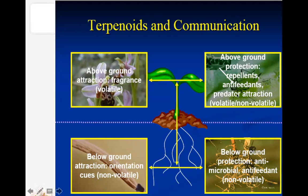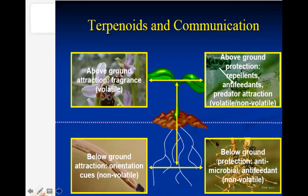Predators are beneficial insects that are harmful to insect pests, and they are attracted by some volatile and non-volatile Terpenoids. Below ground, some Terpenoids attract beneficial microorganisms or insects, while others are antimicrobial or antifeedant against insects. Plants can communicate with beneficial organisms through Terpenoids, and they defend themselves from the attack of herbivores and microorganisms using Terpenoids.